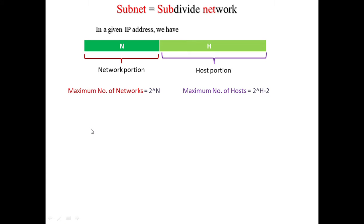Now, subnet. A subnet is basically a subdivided network. An IP address has two portions: one represents the network portion and the second represents the host portion. The maximum number of networks which can be assigned an IP address is equal to 2 raised to the power n, and this depends on the number of bits there.